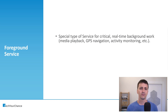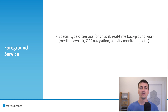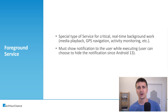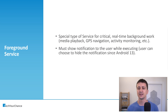Examples of use cases where you use foreground services include media playback — for example when you play your favorite podcast — or GPS navigation, or activity monitoring where you jog around and the system records your route. When you launch a foreground service, it must show a notification to the user so the user is aware that a foreground service is executing in the background.